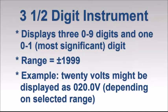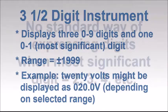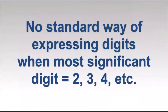This is further complicated when the most significant digit can be numbers other than zero or one. There is no uniformly adopted standard for expressing this as a fraction. For example, a three-and-three-quarter digit multimeter typically refers to an instrument whose most significant digit can be zero, one, or two. But this fraction is also used on occasion for instruments that can display three, four, or five as the most significant digit.